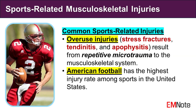Overuse injuries, including stress fractures, tendinitis, and apophysitis, result from repetitive microtrauma to the musculoskeletal system, and are often seen in sports involving repetitive motions or high training volumes. It is worth noting that in the United States, American football has the highest injury rate among sports, with over 12 times the number of injuries compared to the second most common sport.